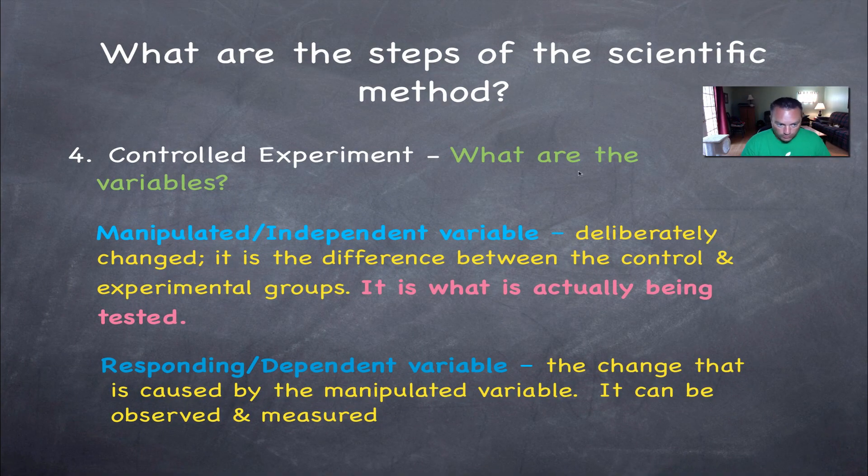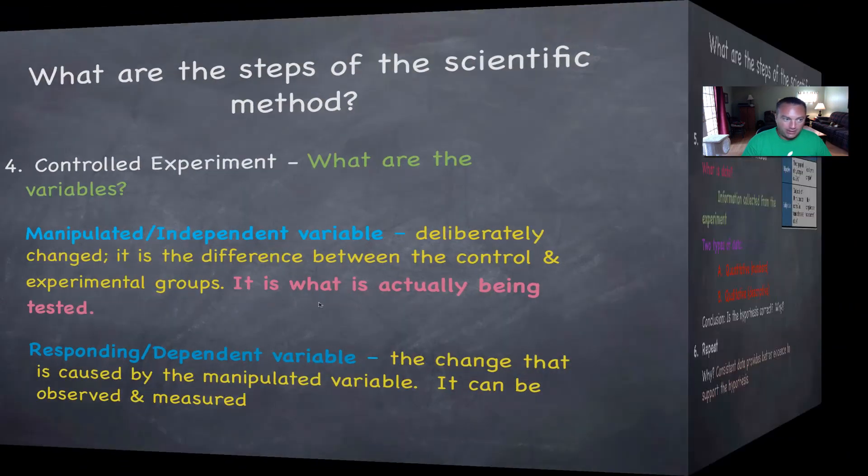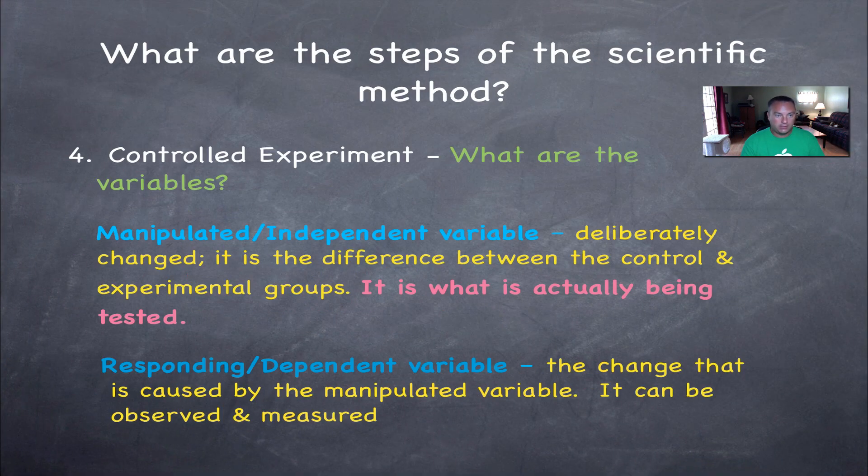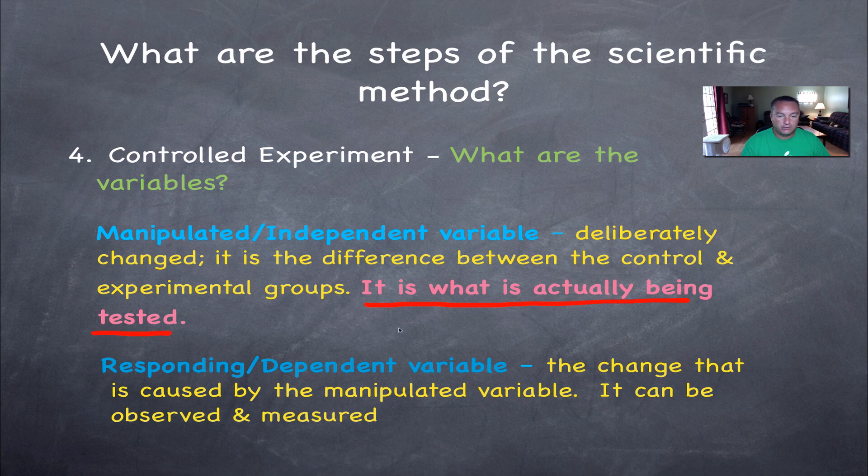What are the variables? Now remember, when we talked about this before, we talked about how we wrote our hypothesis. There's a manipulated variable, and there's a responding variable. Our textbook uses the word independent and dependent. But I think the manipulated and responding say it a little bit better. Now the manipulated variable is deliberately changed. In other words, man caused something to happen. And this is the difference between the control and the experimental group. It's what's actually being tested.